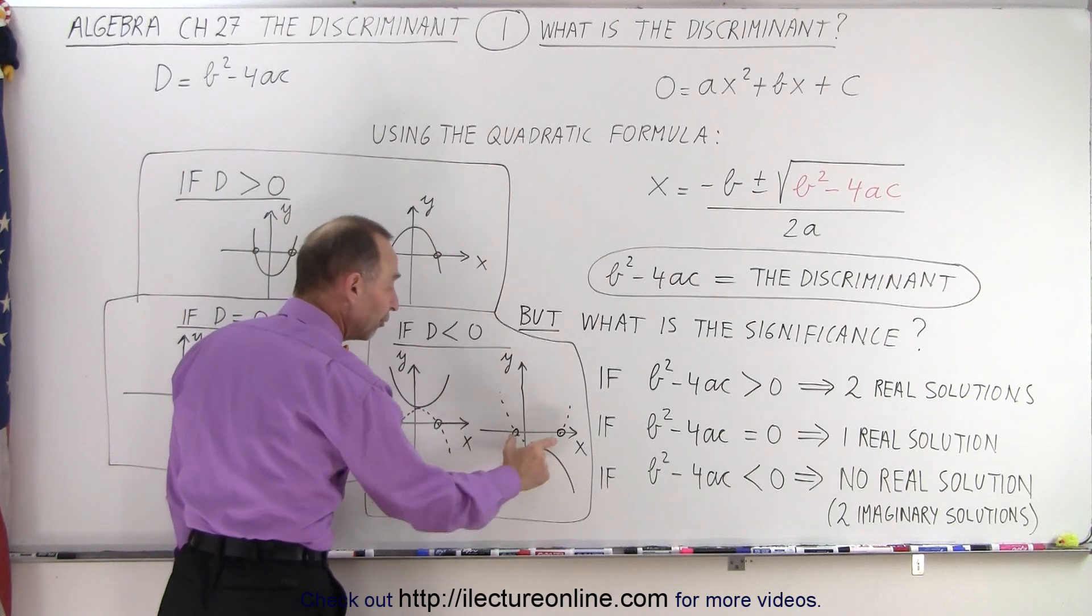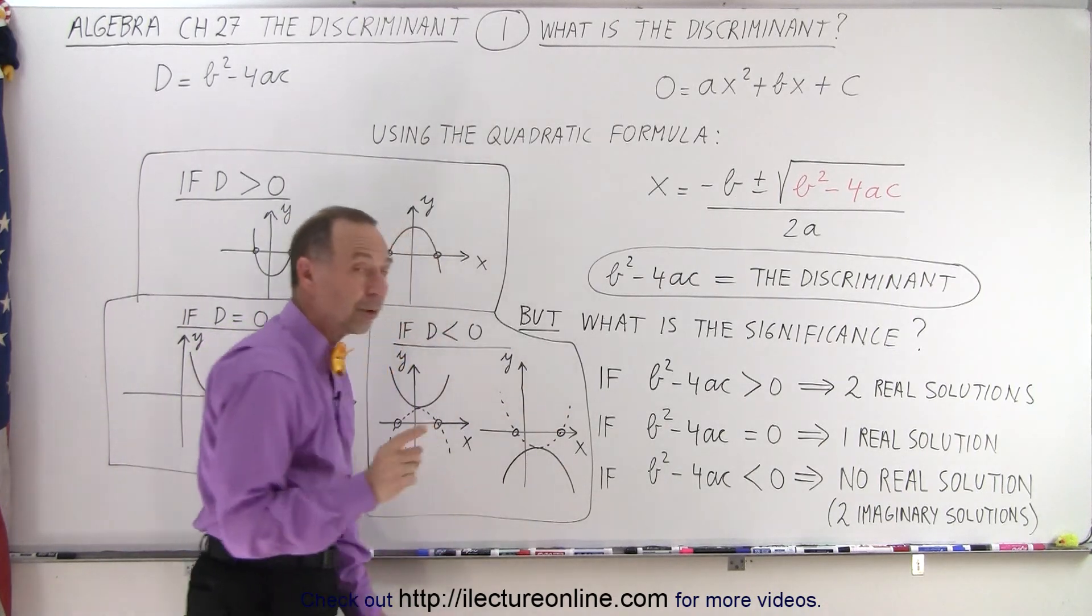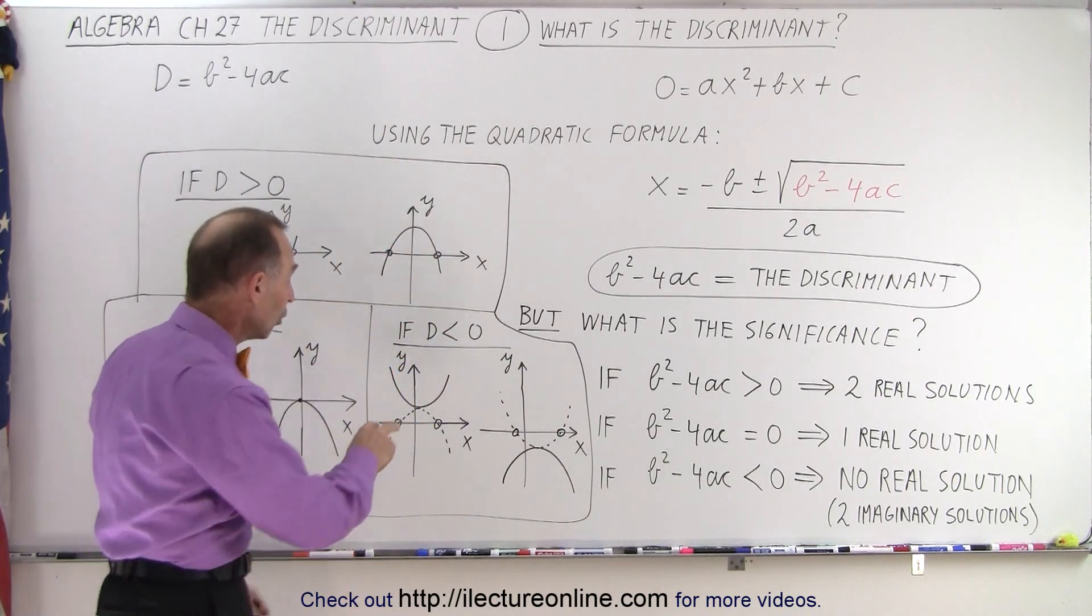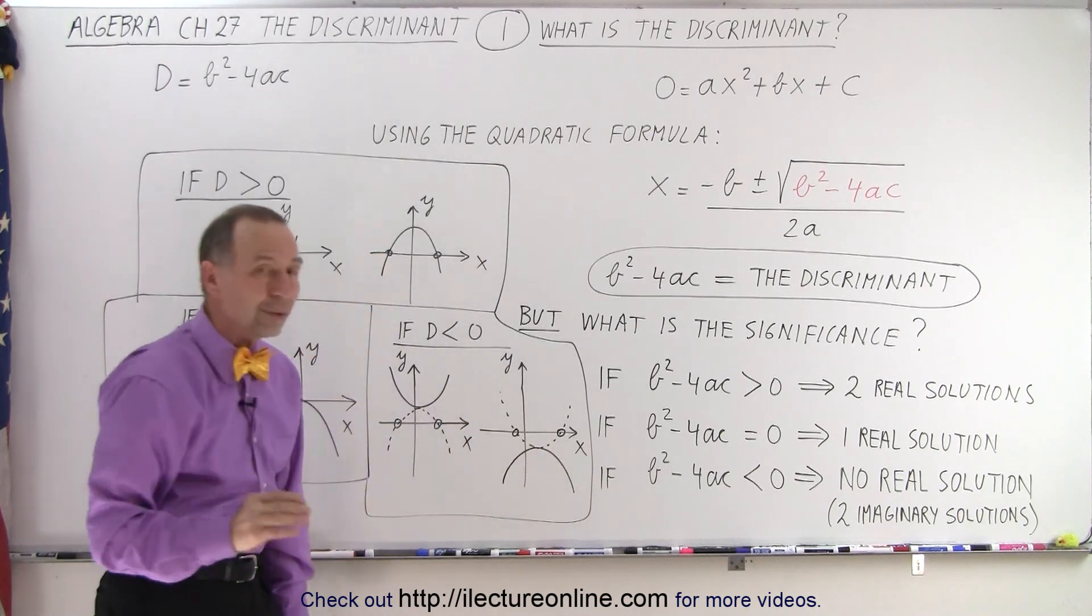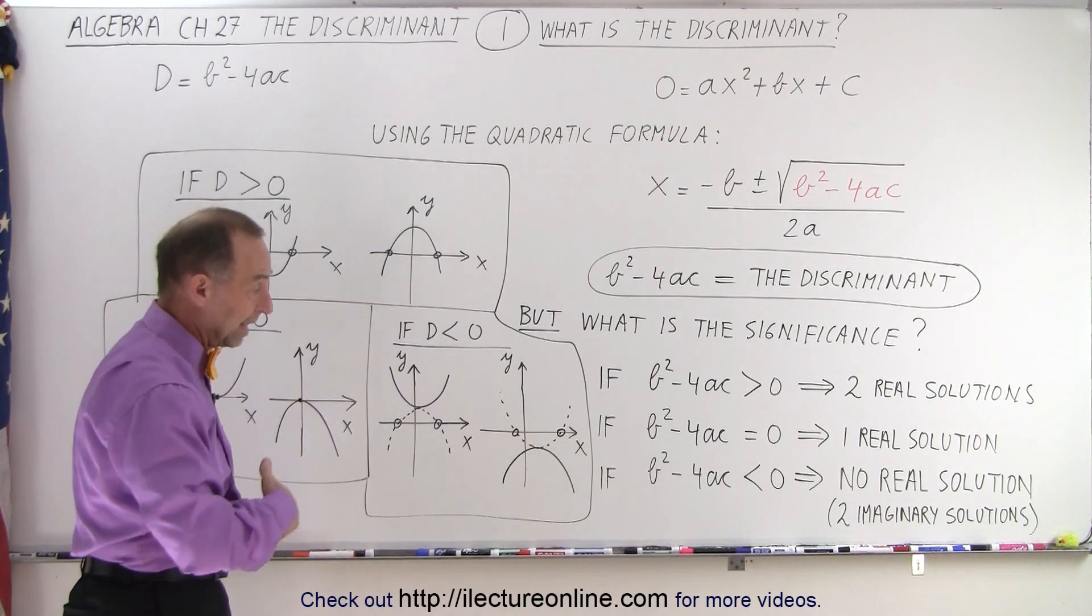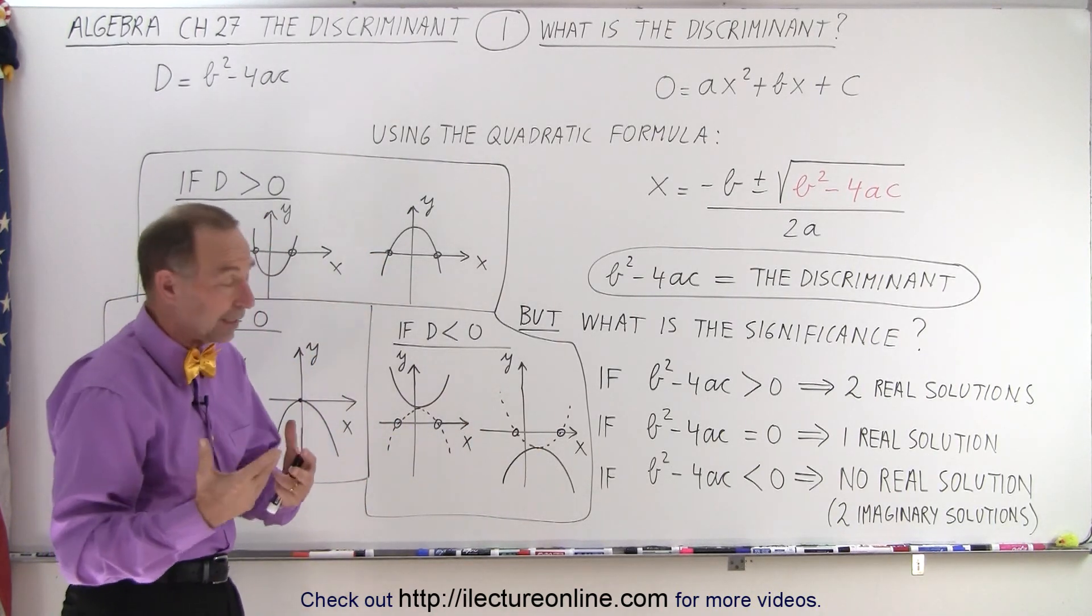Same over here. When we flip it over we have that mirror image. It will cross the x-axis in two places. Those are what we call the two imaginary solutions, and they can be found. They'll include the letter i, which is the square root of negative one.